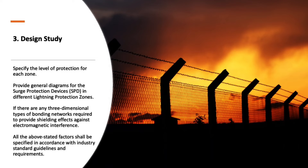Step three: design study. Specify the level of protection for each zone, provide general diagrams for the surge protection devices (SPD) in different lightning protection zones, and if there are any three-dimensional types of bonding networks required, provide shielding effects against electromagnetic interference. All the above stated factors shall be specified in accordance with industry standard guidelines and requirements.